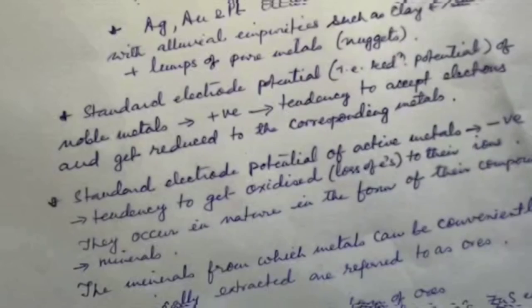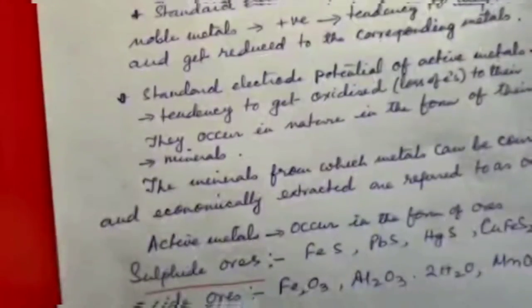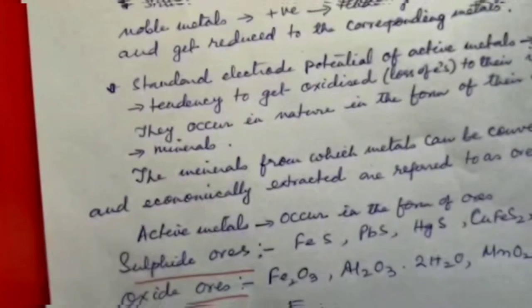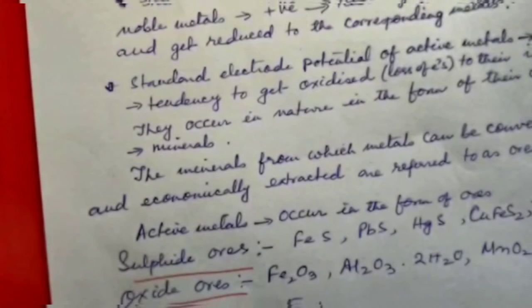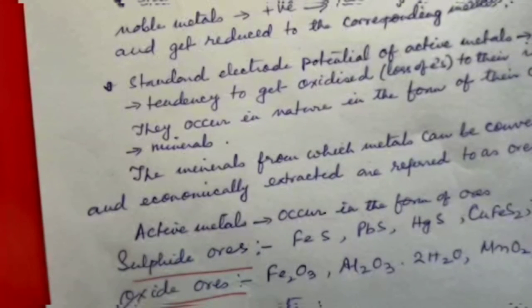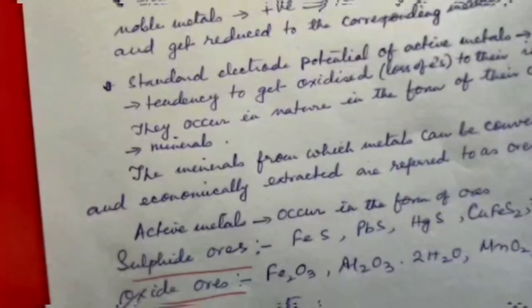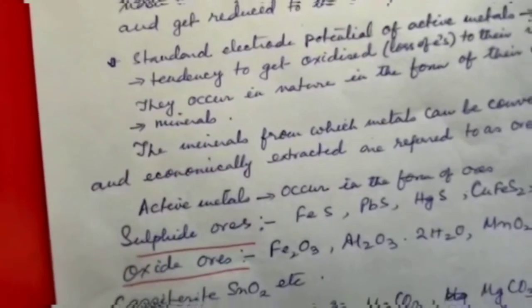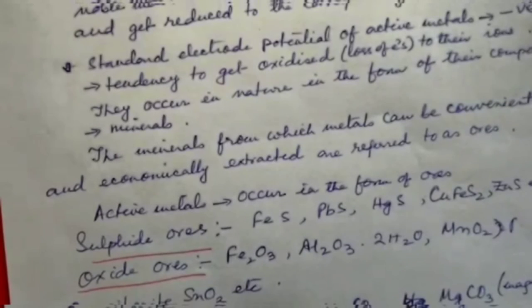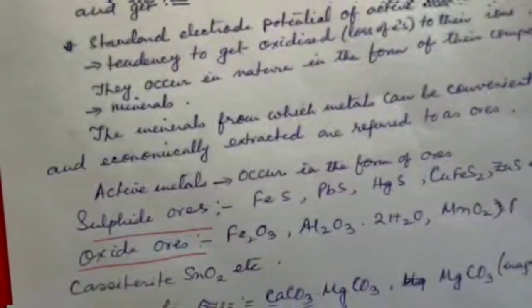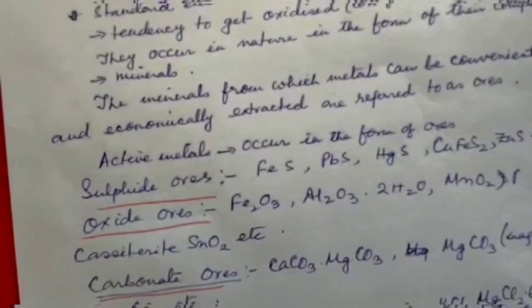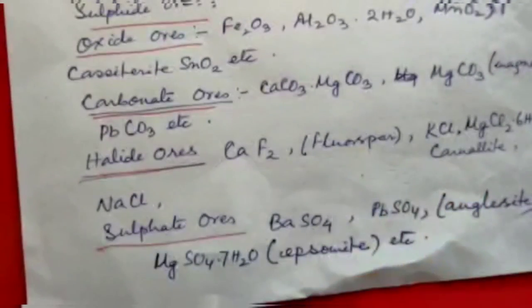The standard electrode potential of active metals, on the other hand, is negative, which means these metals have a tendency to get oxidized to their ions. In other words, the ions of such metals are reluctant to get reduced to the metallic state. That is why active metals occur in nature in the form of their compounds — that is, in the combined state. These compounds are known as minerals, and the minerals from which metals can be conveniently and economically extracted are referred to as ores. Active metals occur in the form of sulfide ores, oxide ores, carbonate ores, halide ores, and sulfate ores.